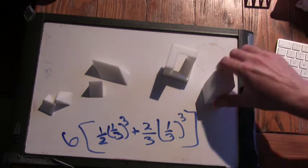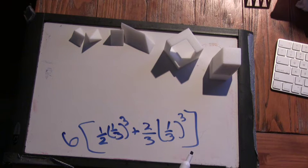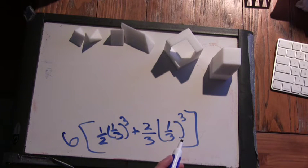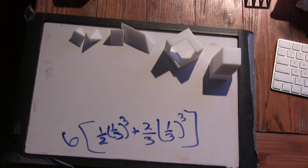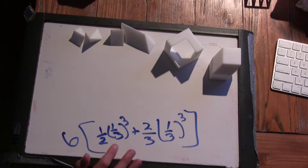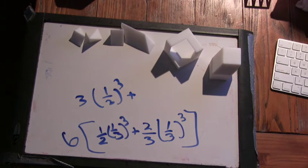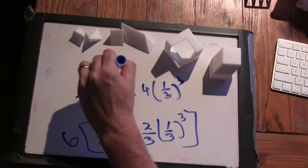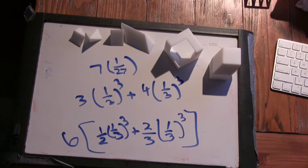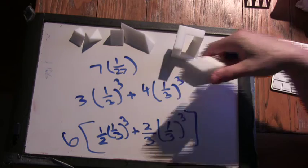Right? Because there's... Yeah. And it may be that it's easier to multiply the six through first. Because we have all these one-third cubes, which we know are one-twenty-sevenths. Yeah. So what do I get when I multiply the six through? Well, you can say it's three times one-third cubed plus four times one-third cubed. So we have seven times one-twenty-seventh. And then for this. Seven-twenty-sevenths. Then we subtract it from one and we get twenty-twenty-sevenths.